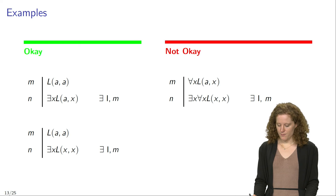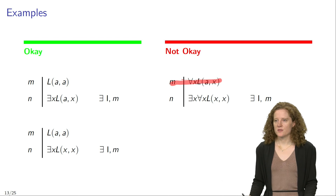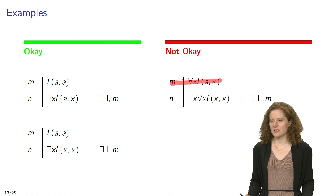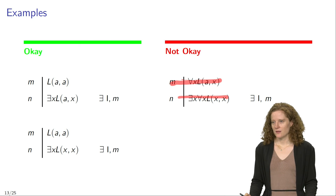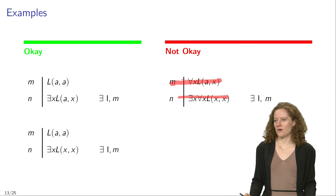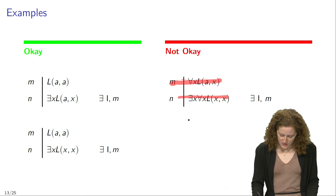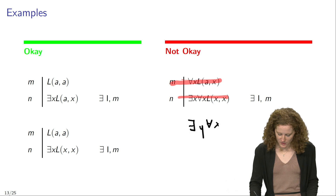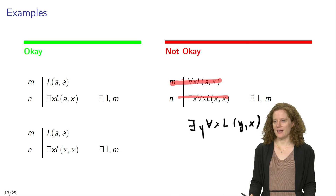On the right-hand side you see a bad example — an incorrect application of existential introduction. Suppose that in line M of your proof you have the sentence 'for all X, LAX,' and suppose you then wanted to infer 'there is an X such that for all X, LXX.' This does not work, because in line M the sentence already contains the variable X. You could instead infer 'there is a Y such that for all X, LAY' — that would be fine. But the sentence in line N is not correctly inferred.